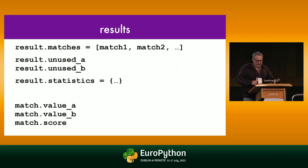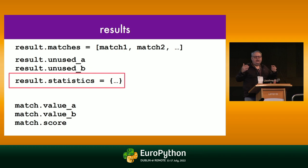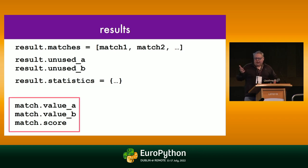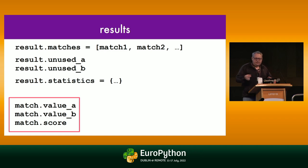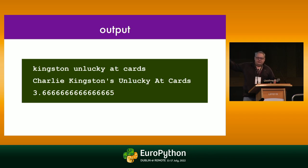When you call Correlate, you get a result object. The most important thing is the list of matches, sorted by confidence level. Unused A and unused B are values from the two datasets that Correlate couldn't find a good match for. Statistics is a dictionary mapping strings to numbers — basically timing data showing where Correlate is spending its time. The match object itself contains the value from dataset A that matches a value from dataset B, plus a score — a numeric confidence level. In this example the match is Kingston Unlucky Cards with a score of 3.6 repeating.